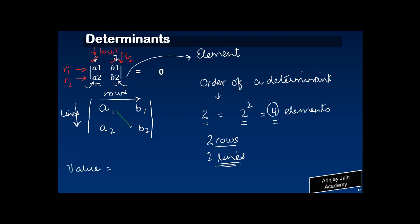The value calculation is not a very complicated process. What you need to do is a cross multiplication — and I am talking about the value of a determinant of order two. If the order is something more, the calculation methodology may differ. For order two, you multiply A1 times B2, and from that value you subtract the second cross multiplication, A2 times B1. When you do this, what you get is the value of the determinant.